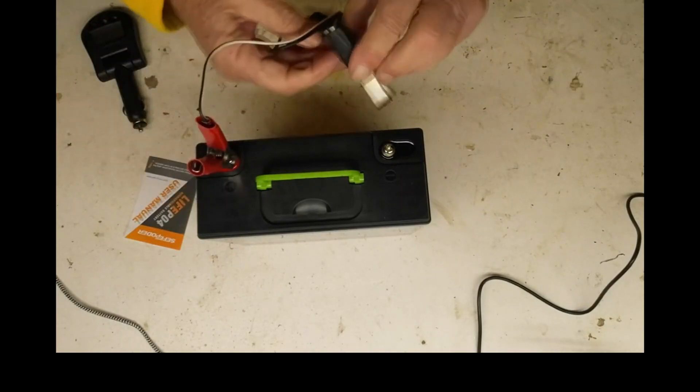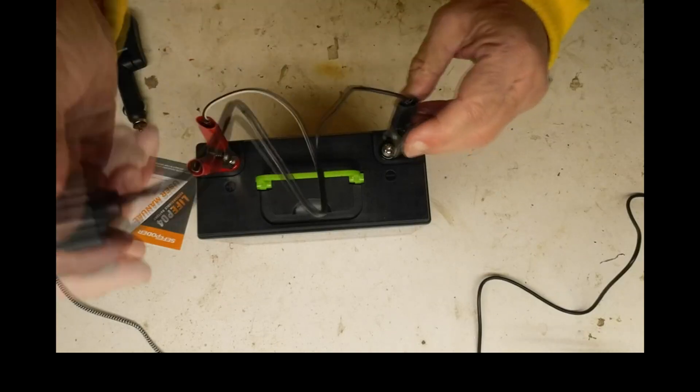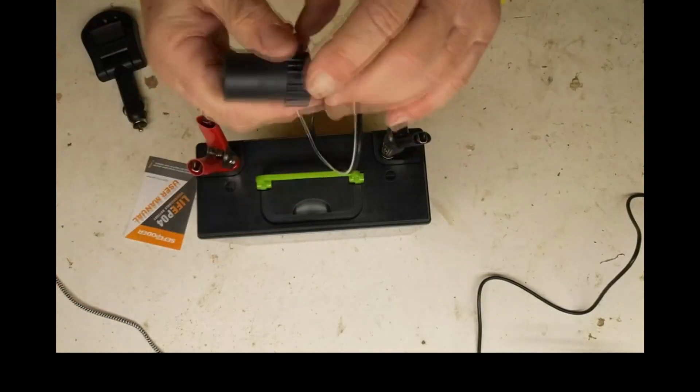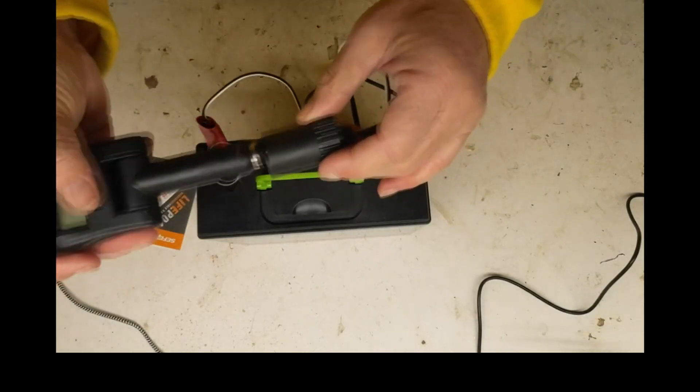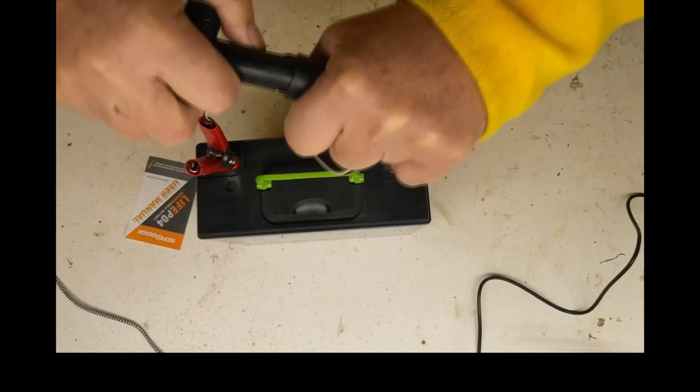So you can run things off from it that usually run off from what we used to call a cigarette lighter in a car, and hook up a regular car battery checker to it.